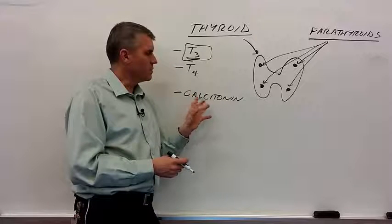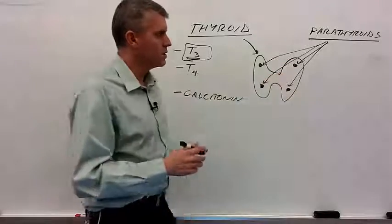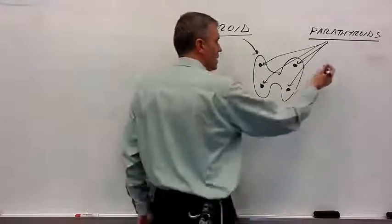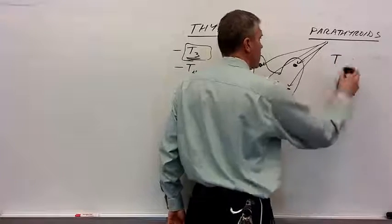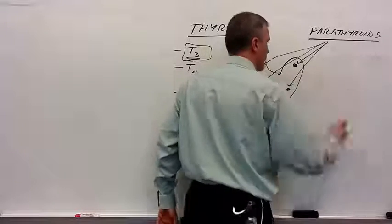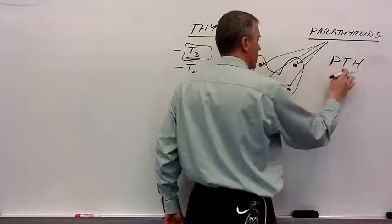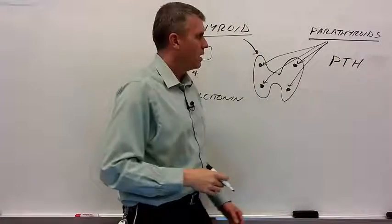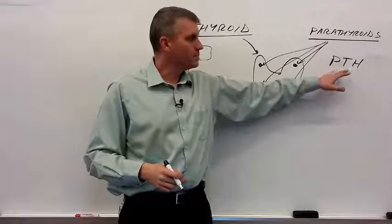Those are the three mechanisms by which calcitonin encourages a decrease in blood calcium levels. Those are all the hormones for the thyroid gland. Before we get into disorders, let's talk about the parathyroid glands. There's one hormone made by the parathyroid glands: PTH, parathyroid hormone.